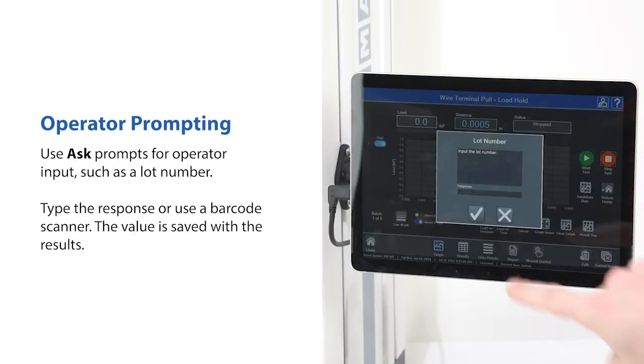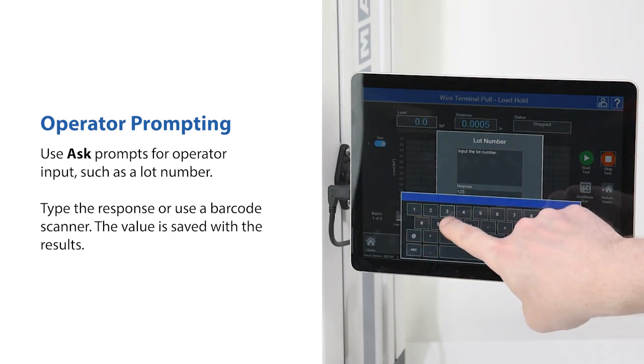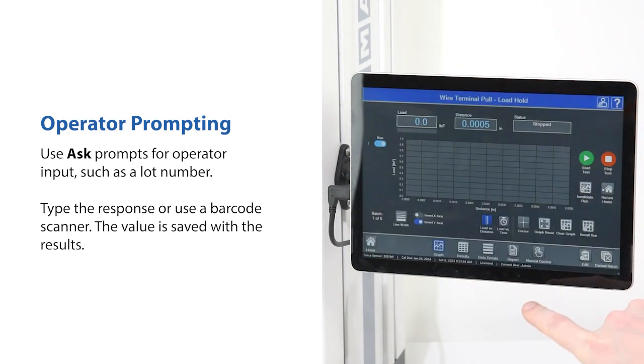Use ask prompts for operator input, such as a lot number. Type the response or use a barcode scanner. The value is saved with the results.